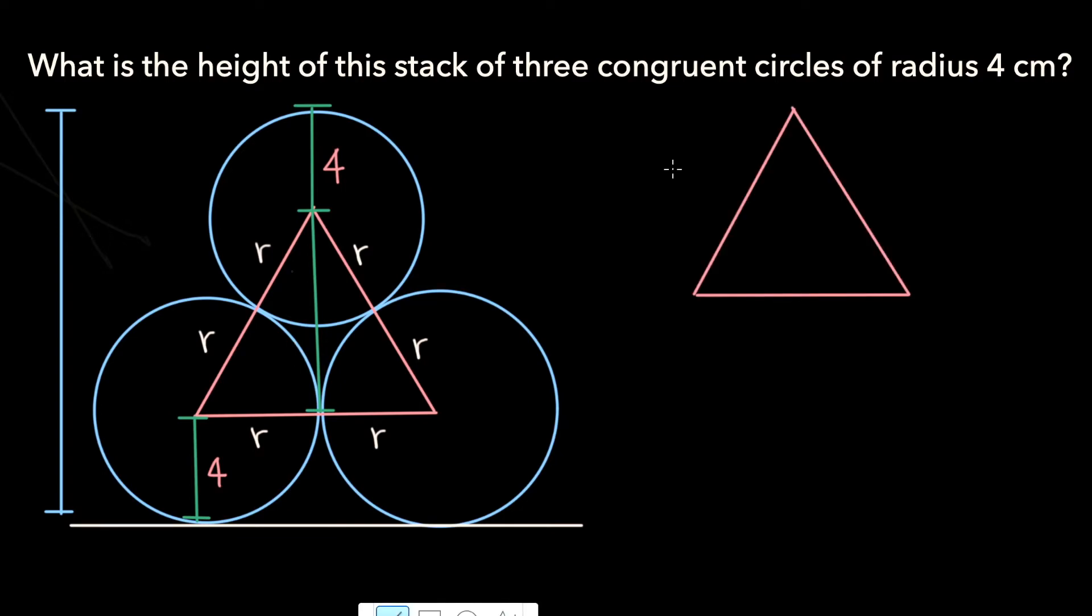So I've redrawn the equilateral triangle for clarity. We've already established that the length of each of these sides is 2r. R is 4, which means that the sides are of length 8.